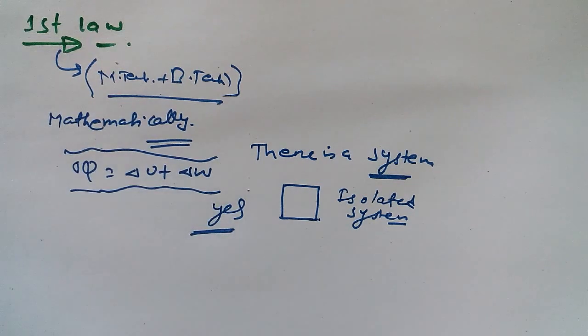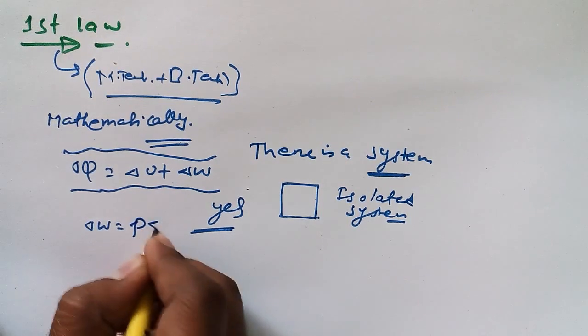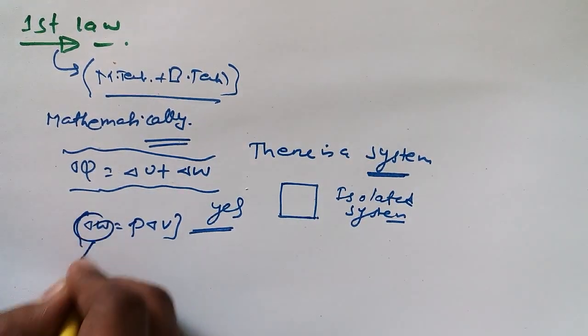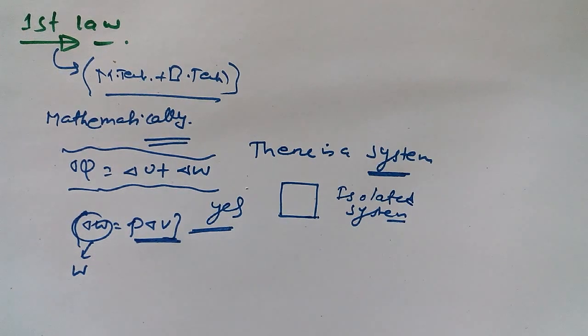In the First Law equation, δW = P·δV. There are two types of work done: work done for flow processes and work done for non-flow processes. I will discuss these topics later and you will understand much more about thermodynamics.